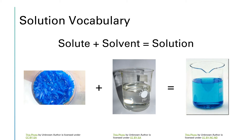The solute is the thing that gets dissolved up into the solvent. The solvent is the piece that does the dissolving. So for instance, in this example on this page, the solute will be these blue crystals of copper sulfate pentahydrate. The solvent will be water. And when you mix the solute with the solvent, you'll get the solution, or this nice bright blue liquid.